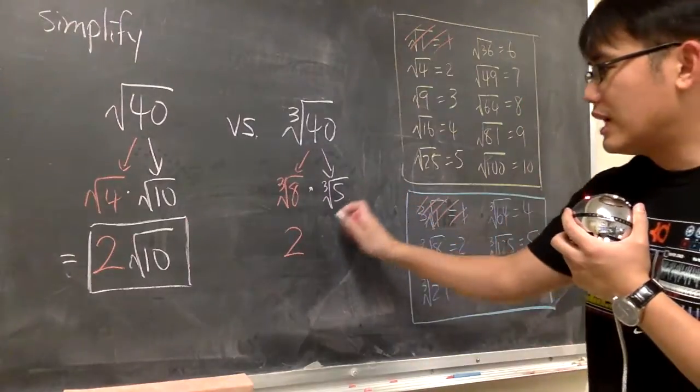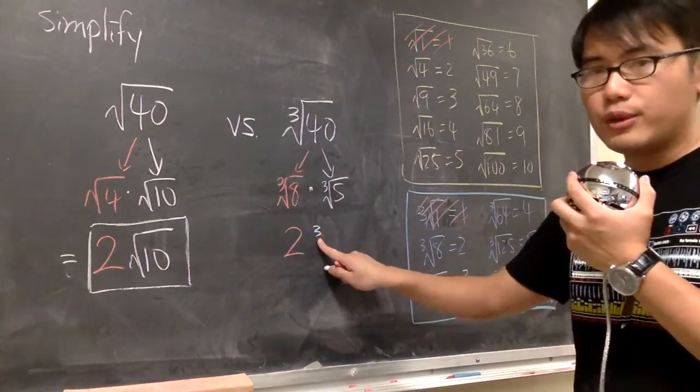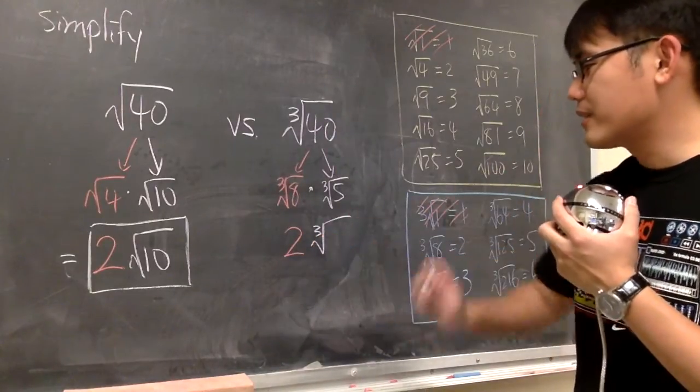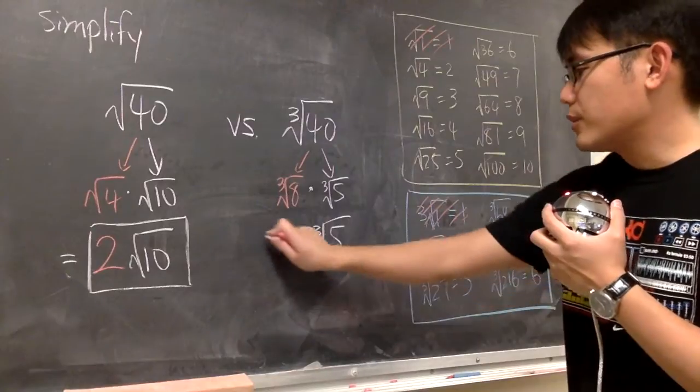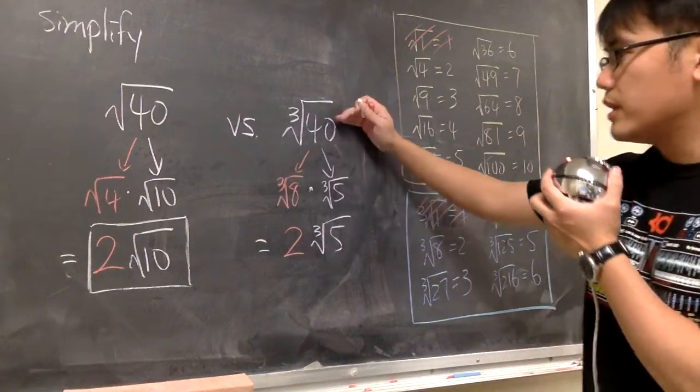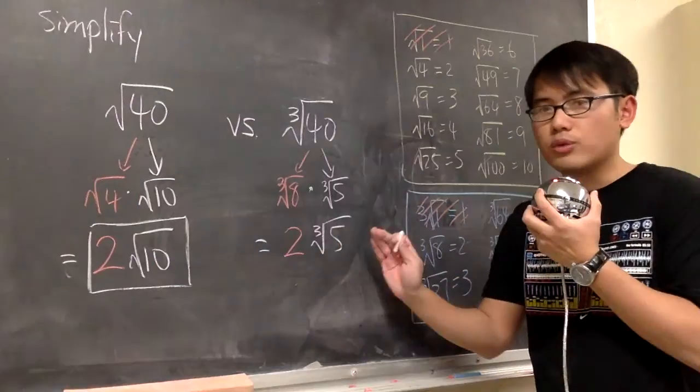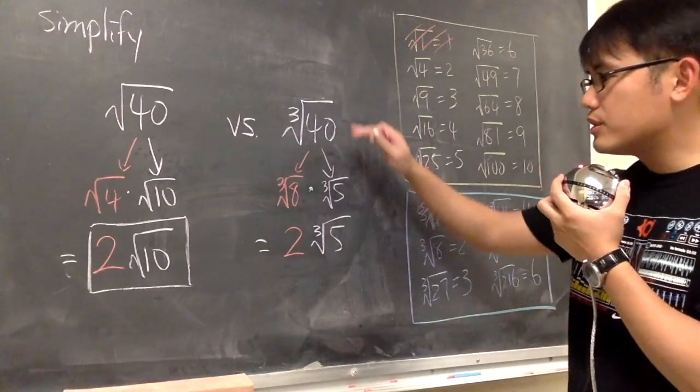And then, we still have the cube root. And make sure you write a little 3, really small for the radical, right? This is the cube root. So the result of this, the cube root of 40, is the same as 2 cube root of 5. This is the simplified version of that.